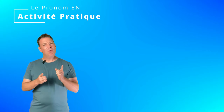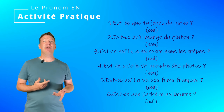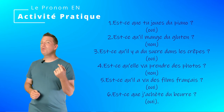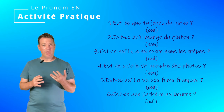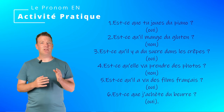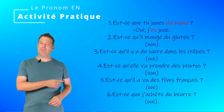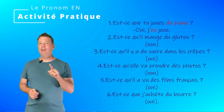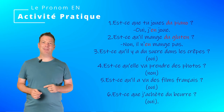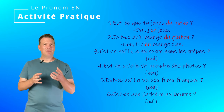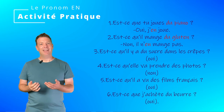Now let's do an activity — answer these yes or no questions, positively or negatively, reusing the verb. Numéro 1: Est-ce que tu joues du piano? Answer positively — PIANO is the direct object introduced by DU, so use EN. Oui, j'en joue. Numéro 3: Est-ce qu'il y a du sucre dans les crêpes? Oui, il y en a — EN goes in front of the verb A in the expression IL Y A.